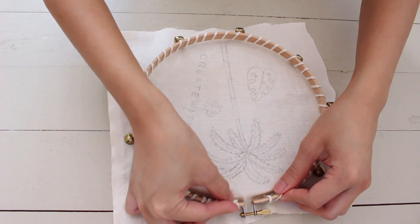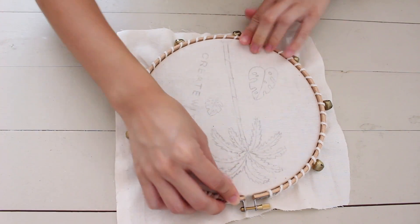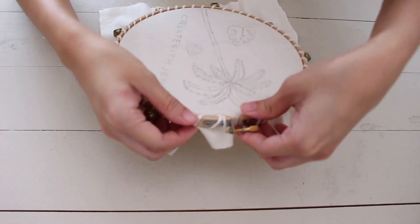Place the fabric over the smaller hoop and the larger hoop over it. Then, tighten the fabric and the screw.